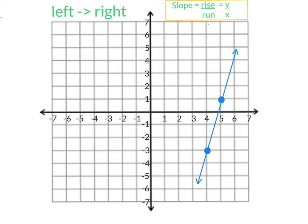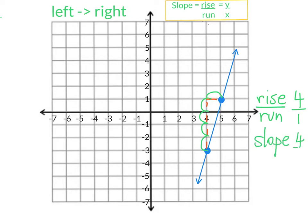I'm going to draw our little path. I'm going to count our rise: one, two, three, four. So we rise four. And from here, we run one. So our slope is four over one. We could also see it written as four — it's the same thing because we know that every whole number has a denominator of one.